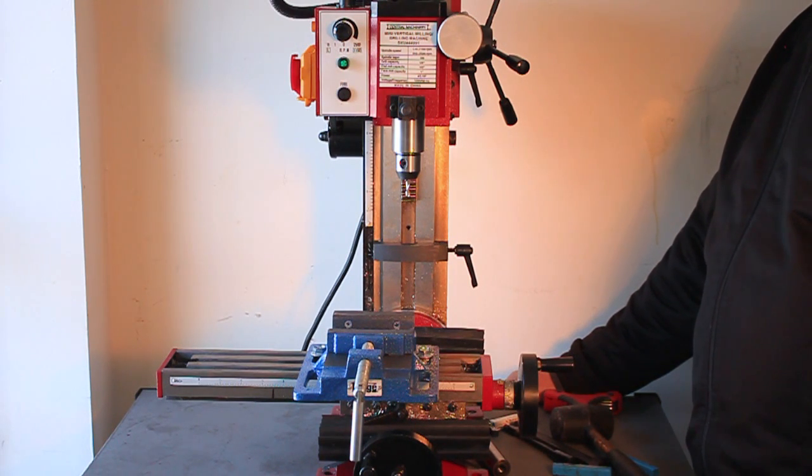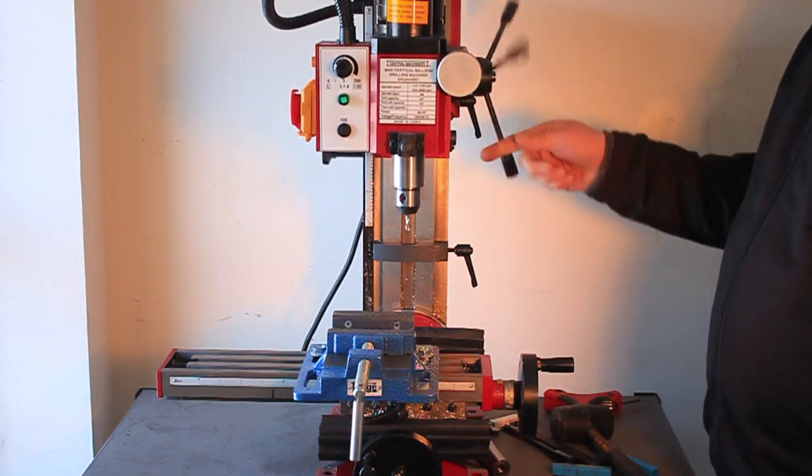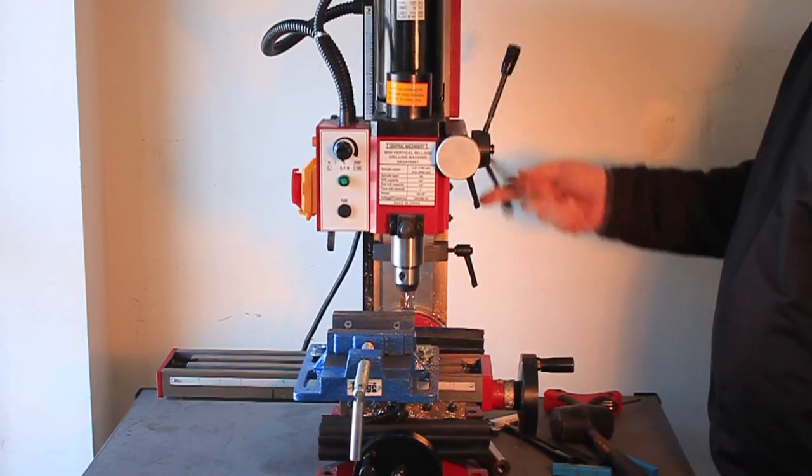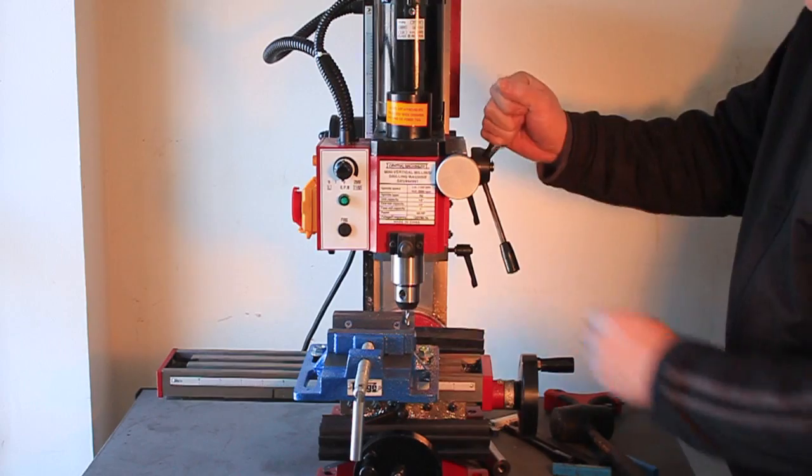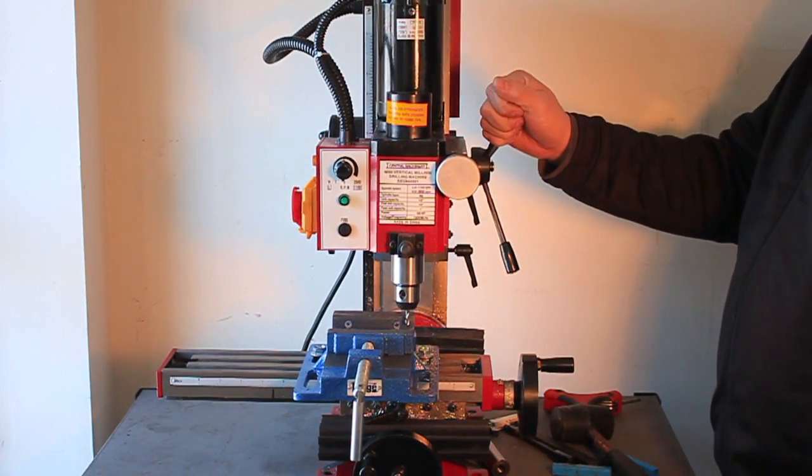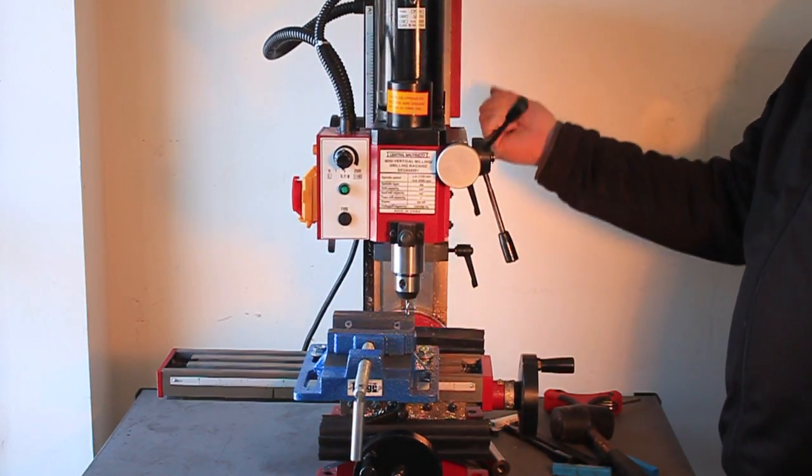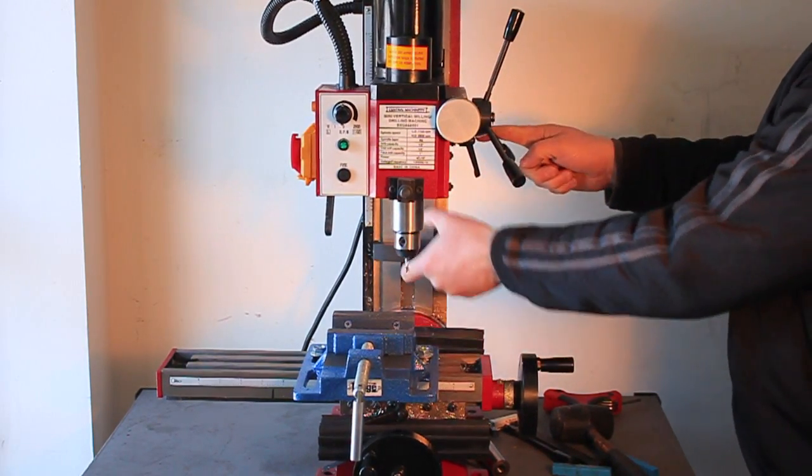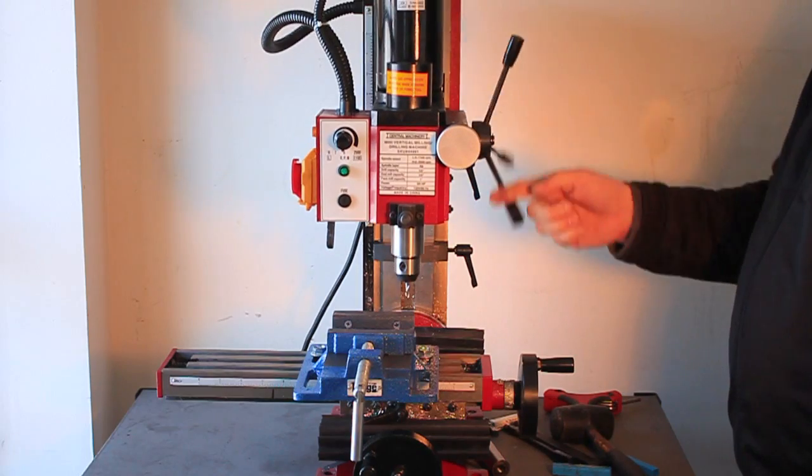Just a couple more things about the machine. What you've got here is a depth guide here, so you know when you're drilling. You've got a stop guide here, so you can adjust that. I have this one dialed in to the cut I need, so I'm just going to leave that in place. But again this slides up and down, so it's nice to have that stop guide.